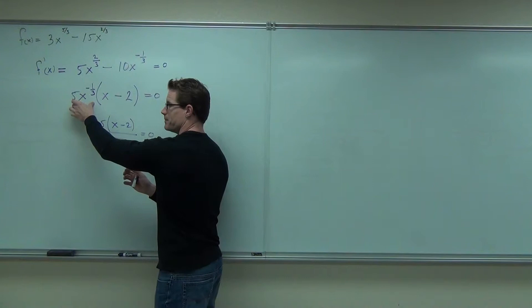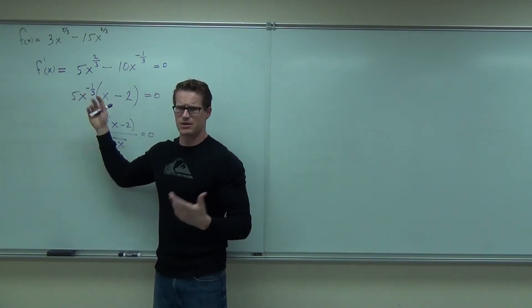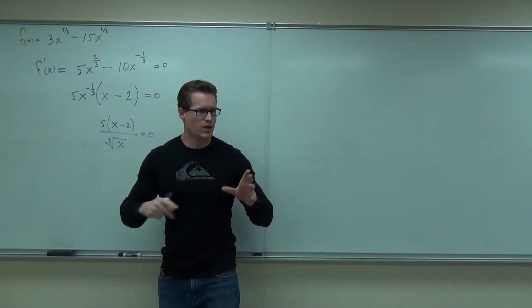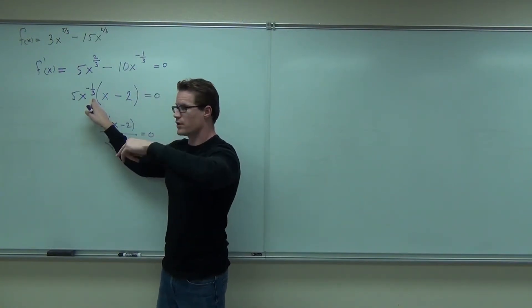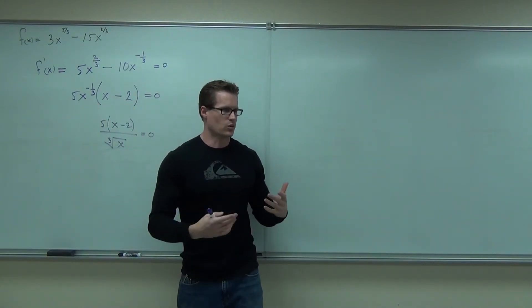Even though that's a denominator. And some of you might go, oh, well, zero product property, right? Because you have something times something equals zero. Well, yeah, that's true. But realize what this is. This is actually 1 over the cube root of x. You follow me on that? That's why I'm giving it to you this way so that when you come up with your problems, you get the right critical numbers.